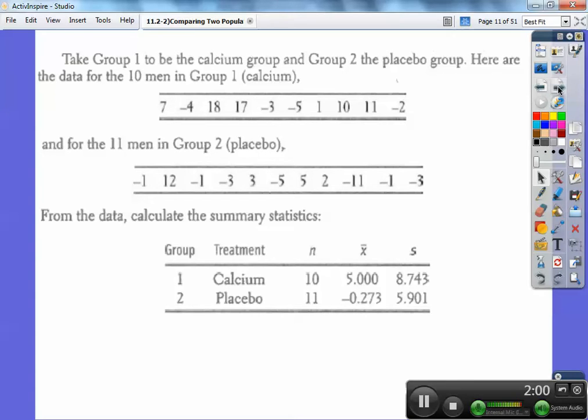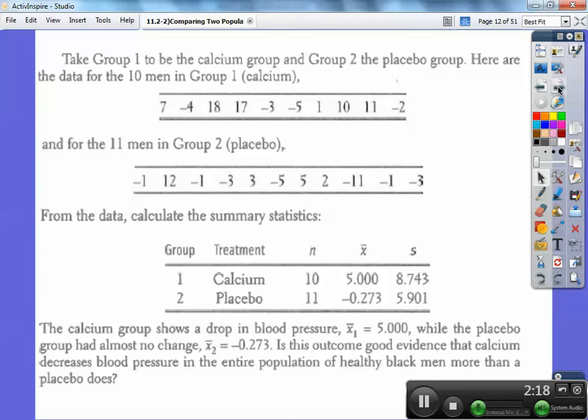From the data, you can calculate that. Now we did this in class. If we did a one variable statistic for this group right here, we'd find that the mean is five and the sample standard deviation is 8.743. And if you did a one variable stat for this one, you'd get this data right here. So the calcium group shows a drop in blood pressure of five right there.